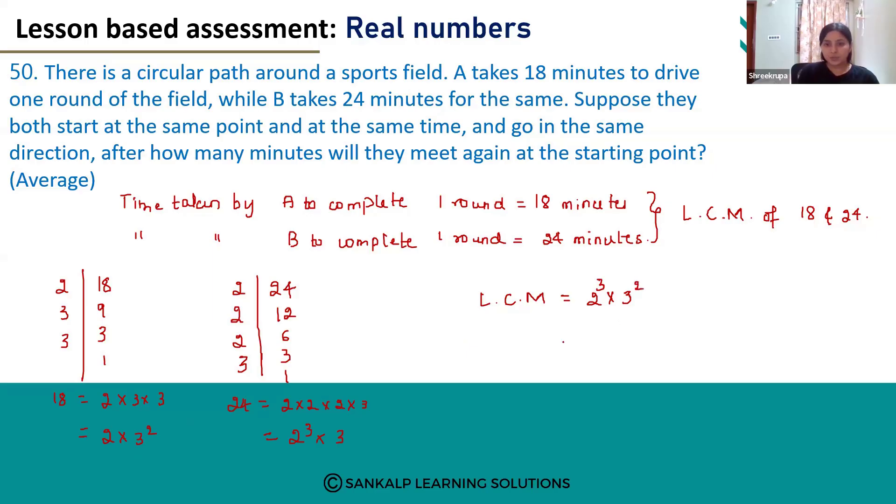It is 2 multiplied 3 times and 3 multiplied 2 times. So, the final answer will be 2 times 2 is 4, 4 times 2 is 8, 8 into 9, 8 times 9 is 72.